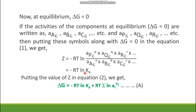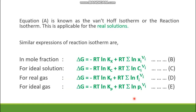Replacing Z with −RT ln Ka in equation 2 gives: ΔG = −RT ln Ka + RT × summation of ln(Ai^νi). This is equation A — the Van't Hoff isotherm or reaction isotherm. Its main feature is that it is applicable to real solutions, where activities are used.